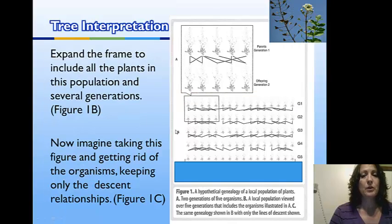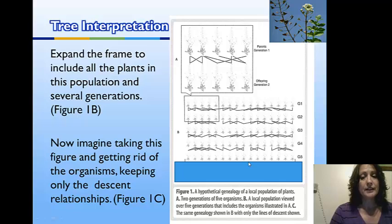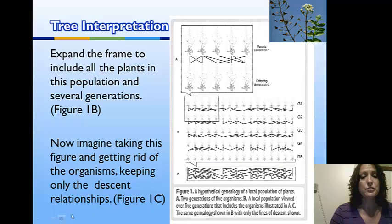If I open this up and expand it more, I can look at not just five individuals, but many more individuals within generation one — and not just generation one and two, but all the way to generation five. All the lines represent cross-pollination between the different individuals of that generation. Finally, I can take away the individual organisms and I'm left with just this braided effect of all the cross-pollination.